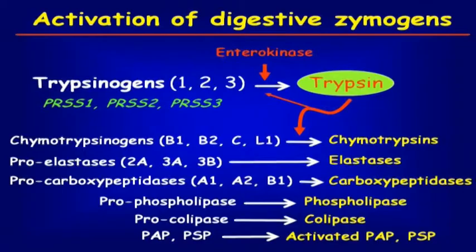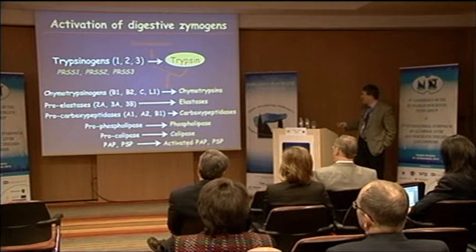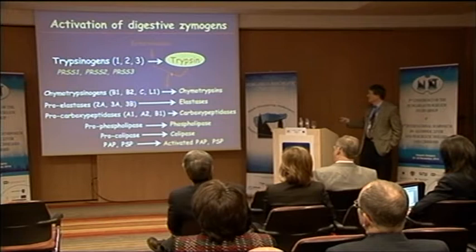Procolipase is processed by trypsin but it's not an activation process. There are also some antibacterial proteins, pancreatitis-associated protein, and pancreatic stone proteins also processed by trypsin, and then they become effective. Importantly, trypsin can activate itself — this is called auto-activation — and this mechanism may be important inside the pancreas.